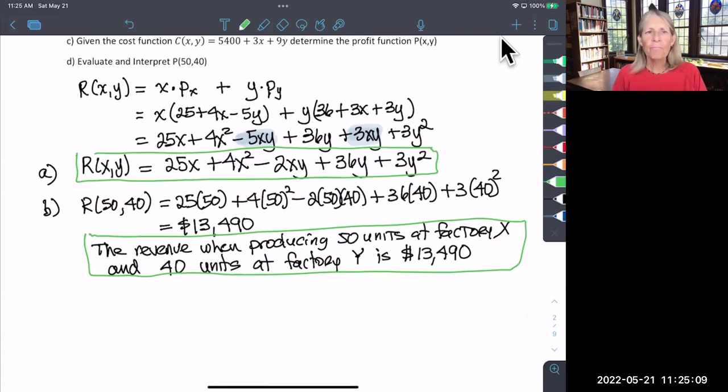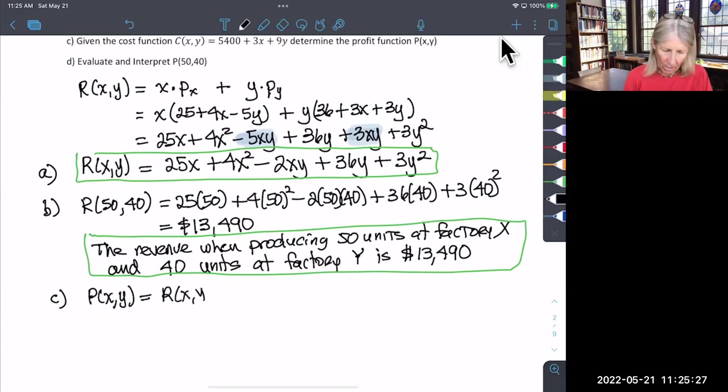Let's jump to part C, which asks us to find the profit function given a cost function. Just like linear equations, the profit function is revenue minus cost. We take the revenue function and subtract the cost function they give us. There are many terms to write down, so I'll pause here to do that and combine like terms to get the profit function.